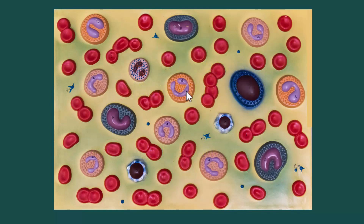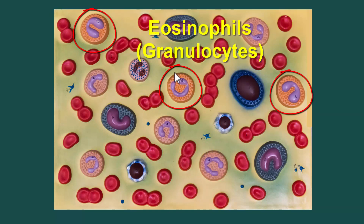Over here we have eosinophils. Under the microscope this is going to look more orangey — the way it stains, with little red dots. This is what we would call a granulocyte, because of the granules you would see under the microscope. These are going to be increased in your blood if you have a parasitic infection, particularly a parasite in its larval form. You'll also see these when you have allergies.